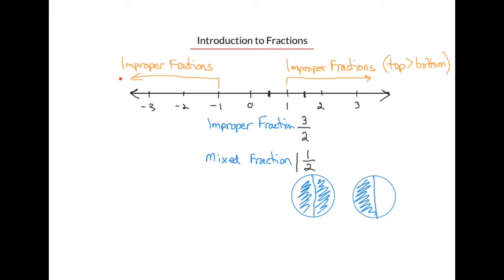And we can also have negative improper fractions. So let's say we divide the whole number spaces to the left of 0 into four equal parts. If we count all the way to the hash mark just before the negative 3, that would be 11 steps out of the four equal parts that we've gone to the left. So that improper fraction is negative 11 fourths.